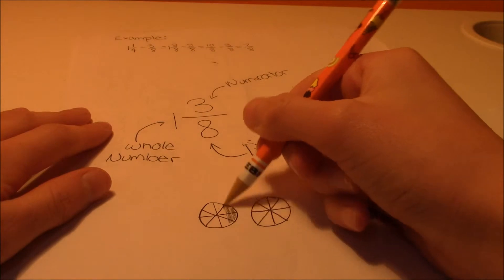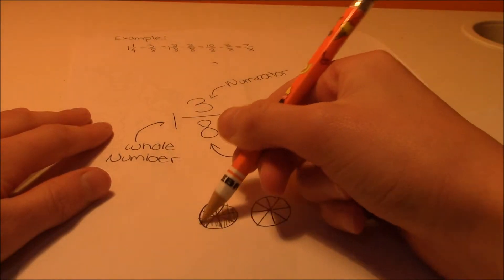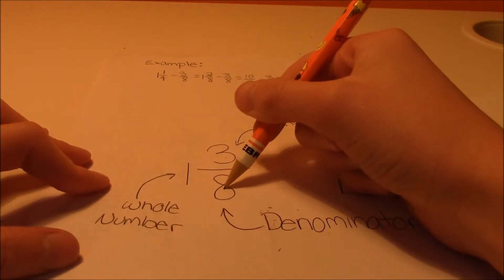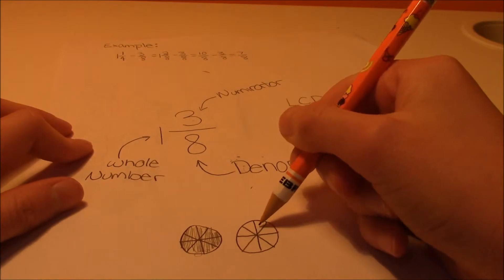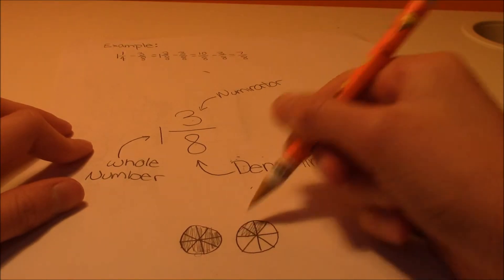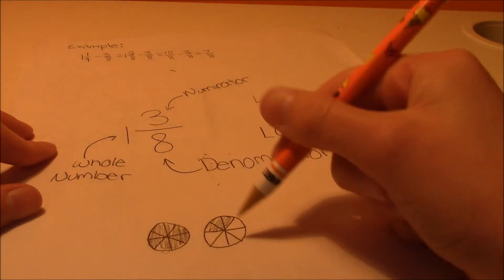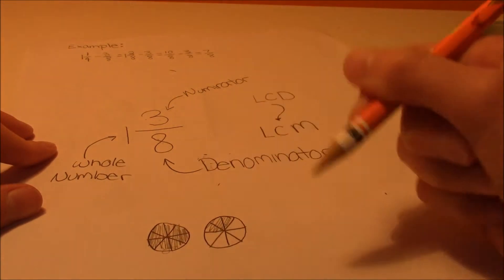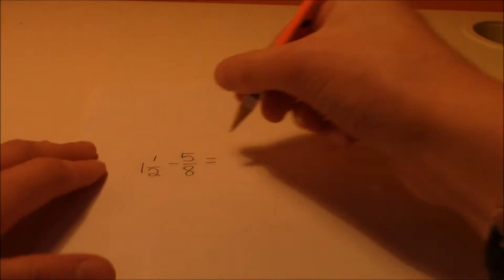So basically, there's one whole pizza of 8 slices, and another one is 3 out of 8 slices of the pizza. So 1 and 3 eighths. So let's get started on this.